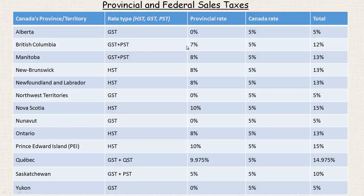British Columbia, on the other hand, has a provincial tax rate of 7% and a GST or federal tax rate of 5%, and 7 plus 5 is 12%. So that's how much sales tax you're paying on lots of items in British Columbia.